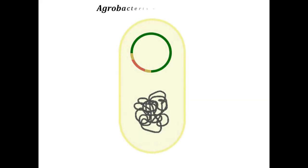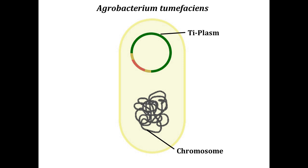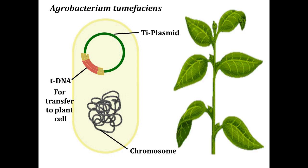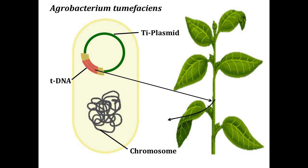The bacterium, Agrobacterium tumefaciens, is a natural genetic engineer of a wide variety of plants. The bacterium has a loop of DNA called a tumor-inducing or Ti plasmid, and can transfer a part of this plasmid into a plant cell. The DNA transferred induces plant cells to make food molecules for the bacterium by uncontrolled cell division.